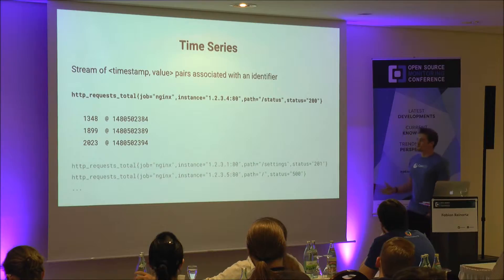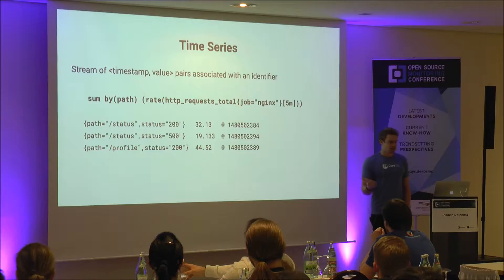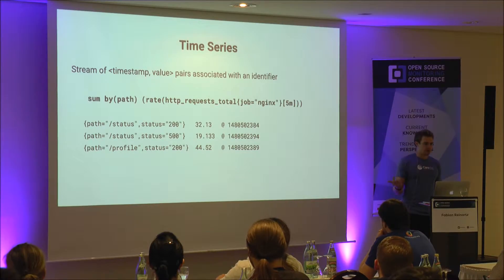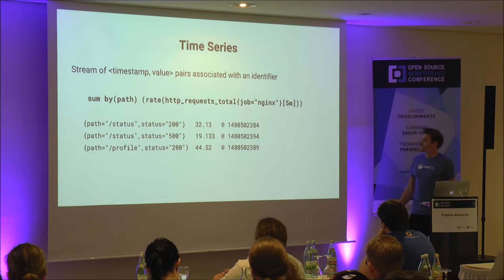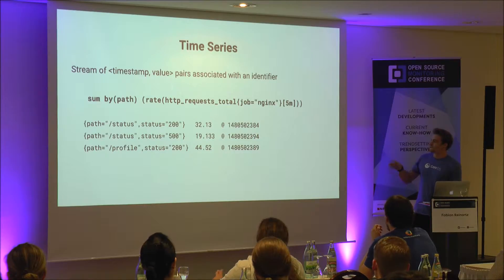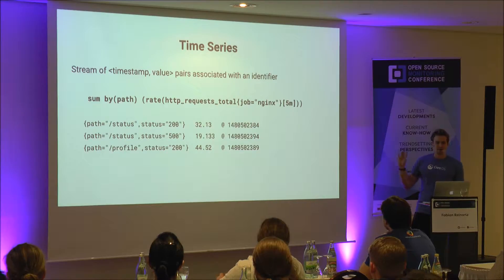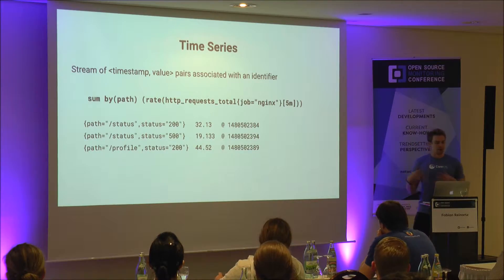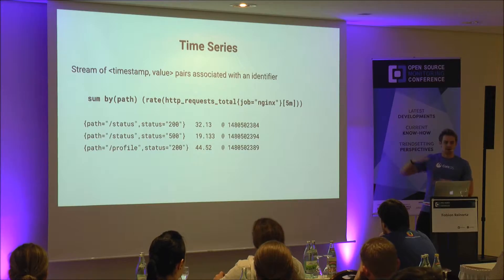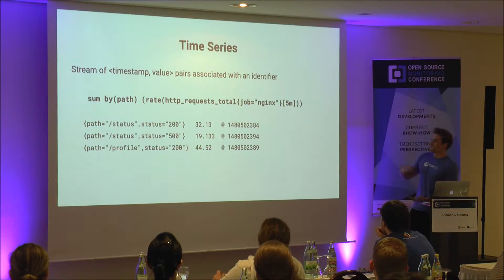Time series systems are huge, which means you need some way to query them — filtering, retrieving, transforming, and aggregating — to get a comprehensible set from a larger one. For example, selecting HTTP request total with job equals nginx selects all matching time series. The rate function transforms a counter into a per-second value over the last five minutes. To reduce the set, we aggregate — summing by path preserves the path label and aggregates all others away. This example is actually aggregated by status and path, but you can see how this takes thousands of time series and gives you a comprehensible set.